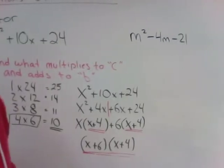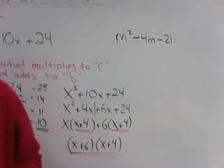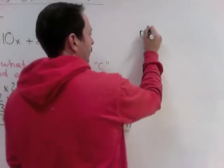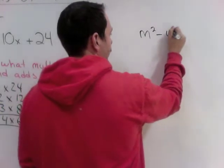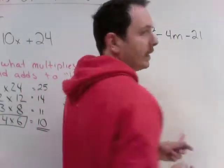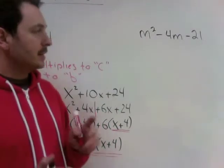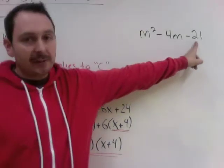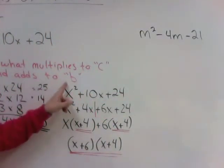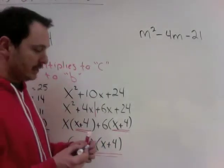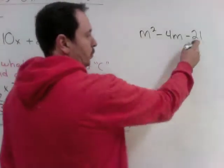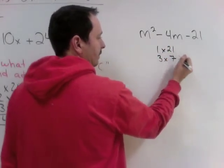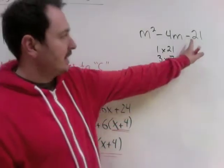Let's look at another example. This stuff is tricky and terribly important for the future. We'll look at this one here. m squared minus 4m minus 21. Our steps: What multiplies to c, so what multiplies to negative 21, but adds to b? The multiples of 21 are 1 times 21 and 3 times 7. But notice, this is negative 21.